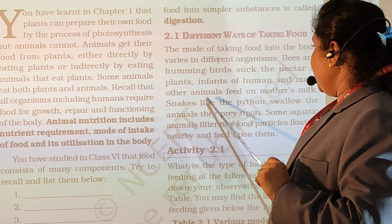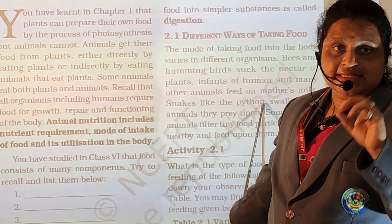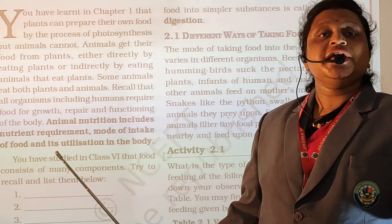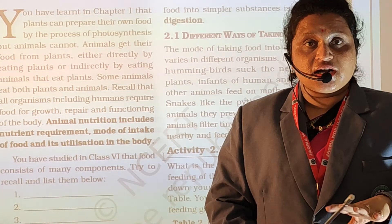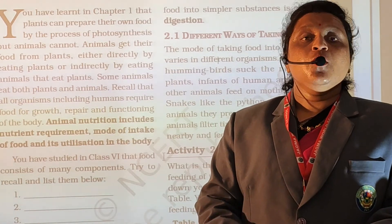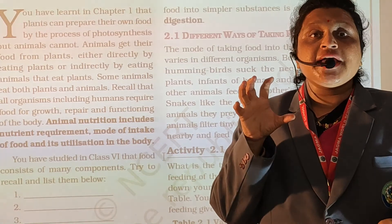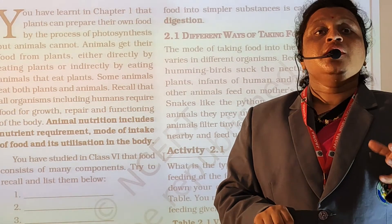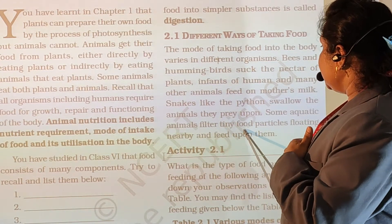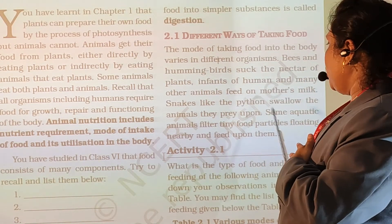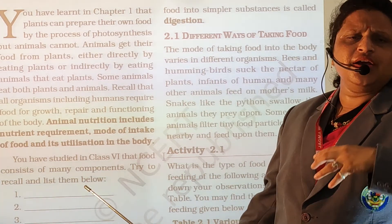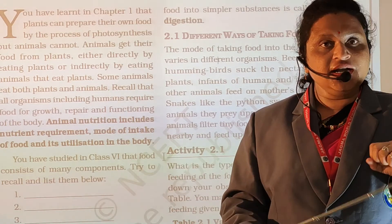Some animals like pythons swallow their prey whole. When a python catches its prey, it swallows the entire animal. Some aquatic animals filter tiny food particles floating nearby and feed upon them. So various animals have different eating habits.